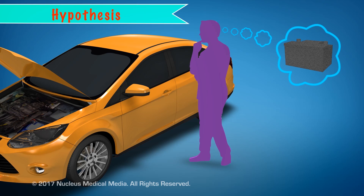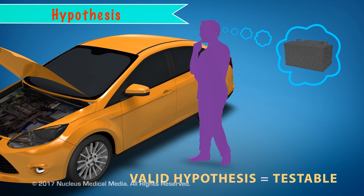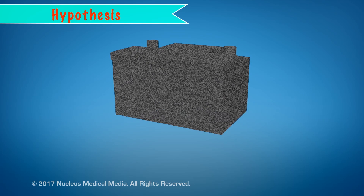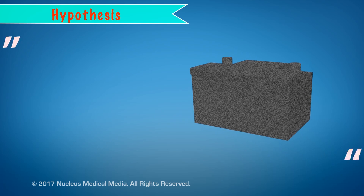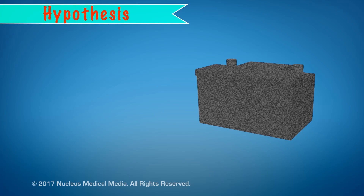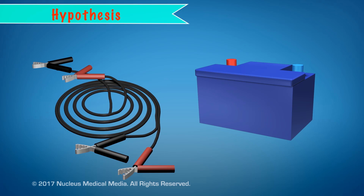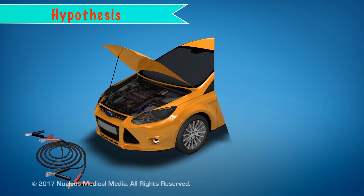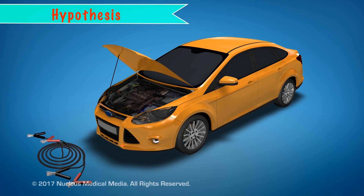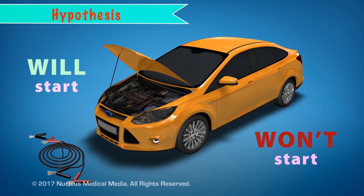You can use this idea to form a testable explanation called a hypothesis. You must be able to test a hypothesis in order for it to be considered valid and scientific. A hypothesis can be presented in the form of an if-then statement. In this case, the hypothesis might be: If my car starts when I use jumper cables, then the battery is the problem. This hypothesis is testable because either your car will or won't start when you use the jumper cables.